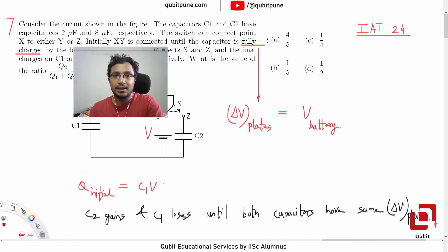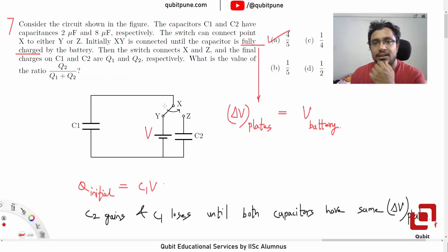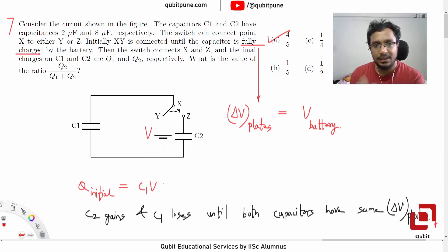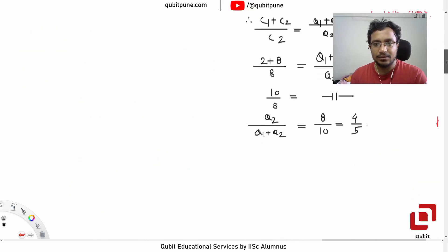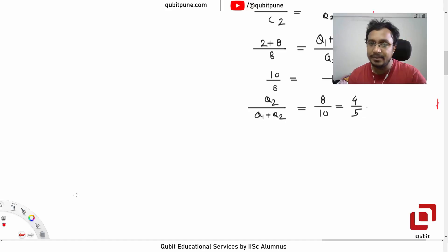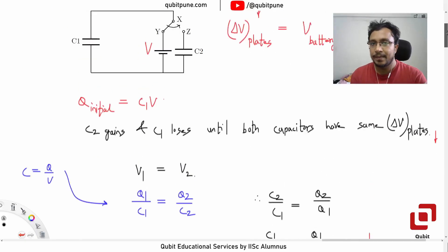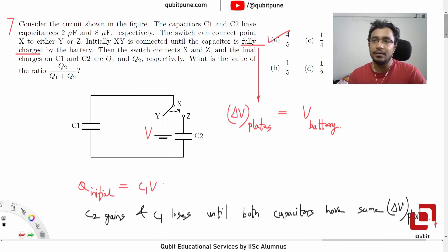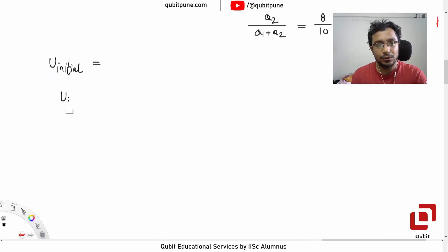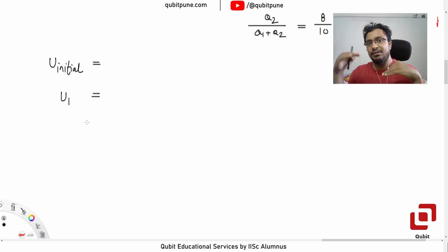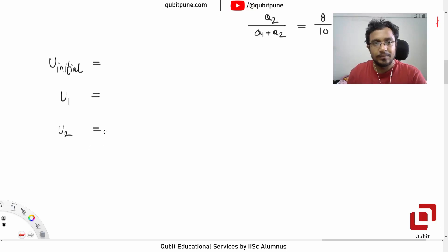Now suppose we are interested in finding the energies that these two capacitors have — the initial energy and the final energy. We are looking for three expressions: first, the potential energy of the first capacitor after it became fully charged by the battery; then U1, after capacitor C1 supplied enough charge so that the potential differences became equal; and then U2.